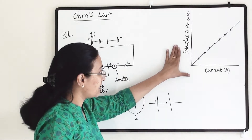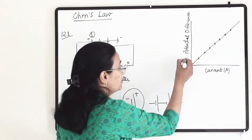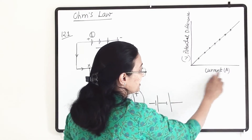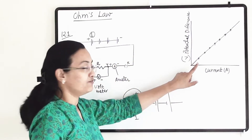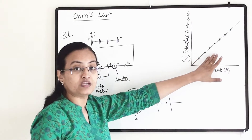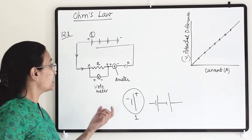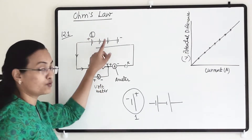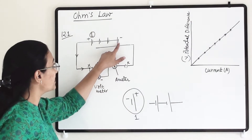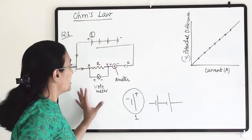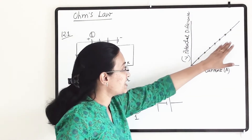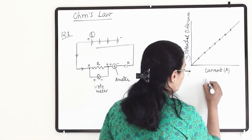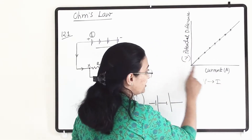We are taking a graph where potential difference in volts is on the y-axis and current I is on the x-axis, and we are plotting whatever values we get from this circuit. In the first connection we use one cell, in the second two cells, in the third three cells, and in the fourth four cells. This is a V versus I graph because we have taken volts and current on the axes.